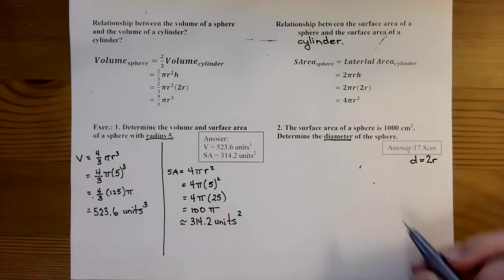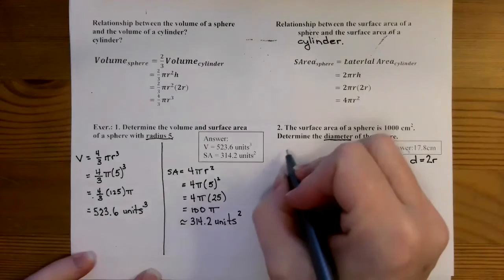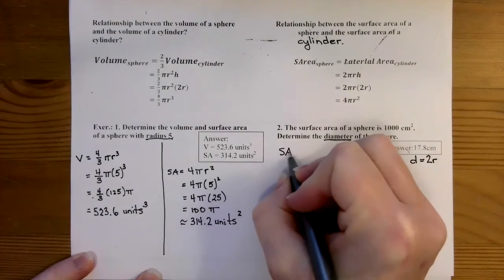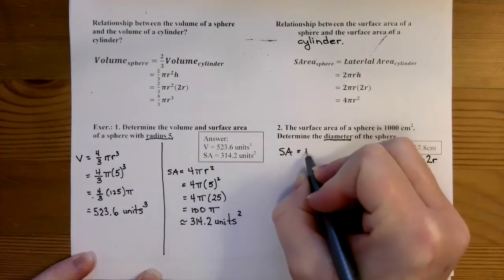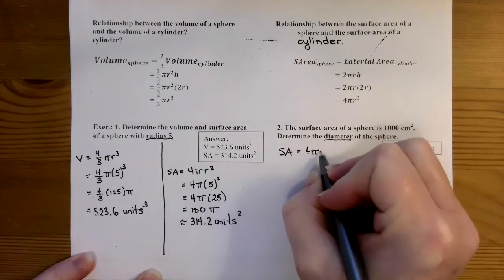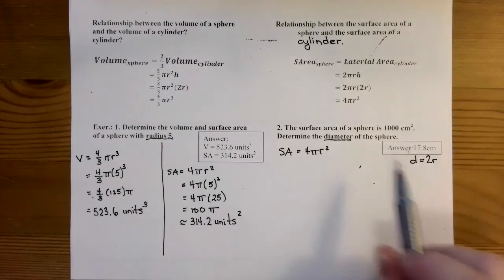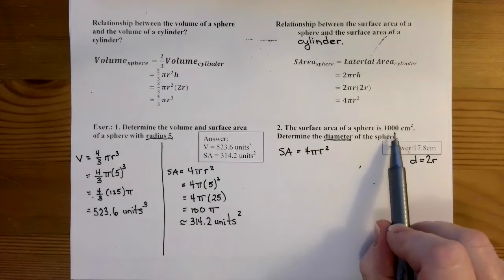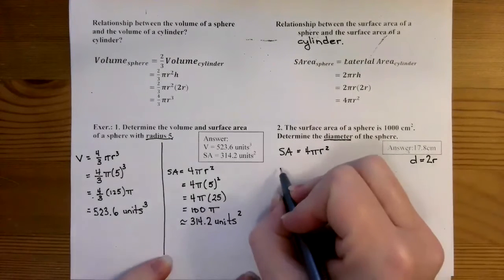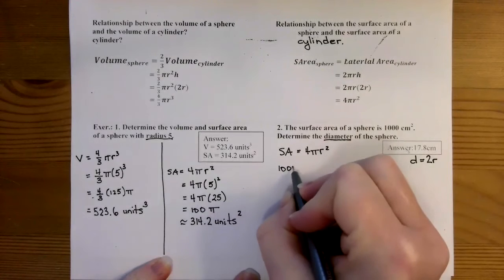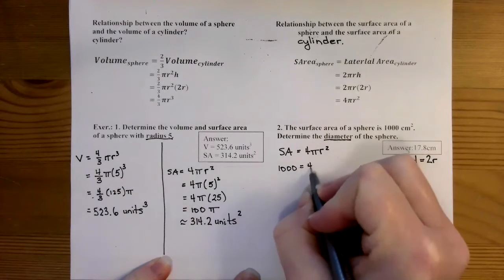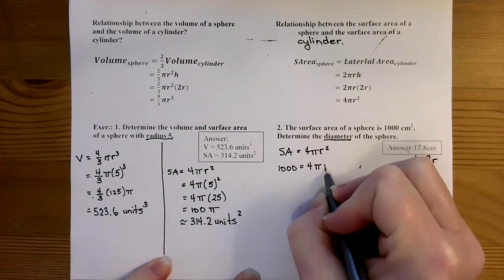So we know that the surface area of a sphere, so let's write that formula down, the surface area of a sphere is equal to 4πr². So in this case, we know that the surface area is 1,000, so we're going to replace the surface area with 1,000, and that's going to equal 4πr².